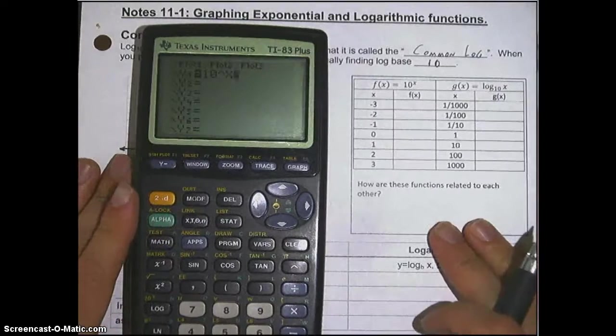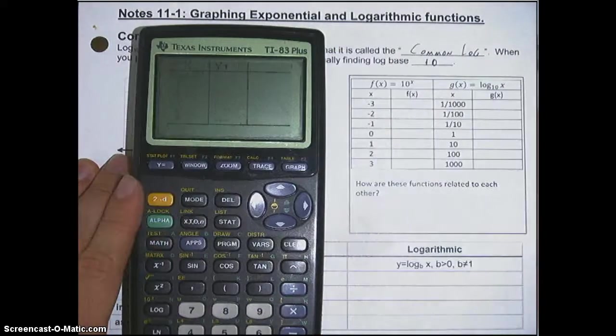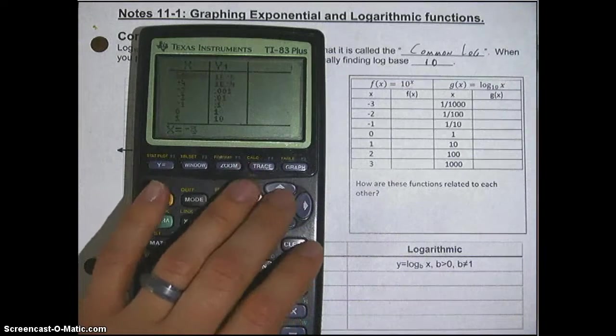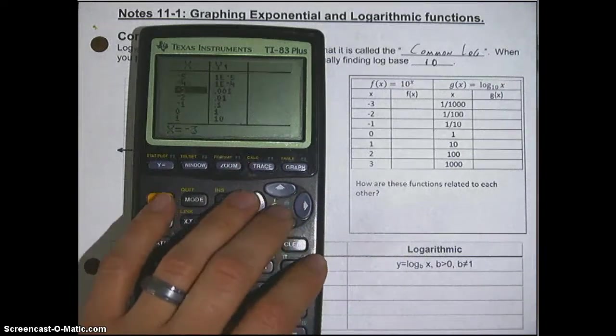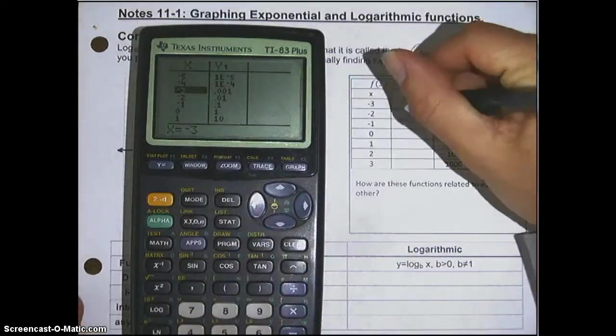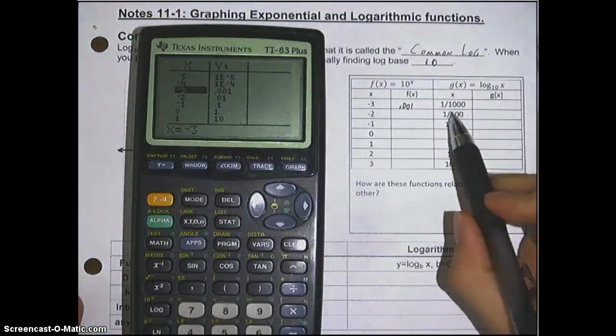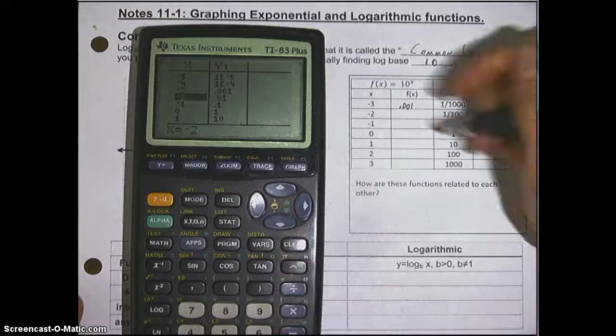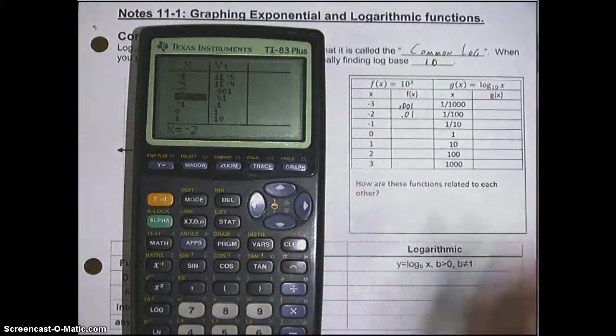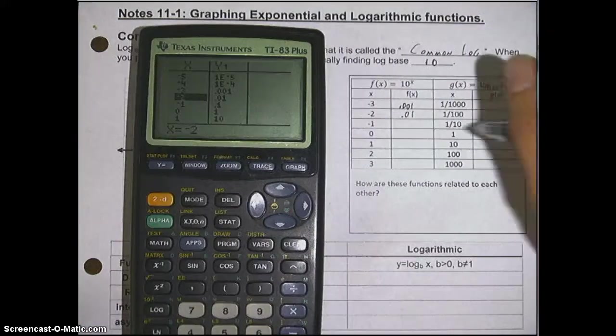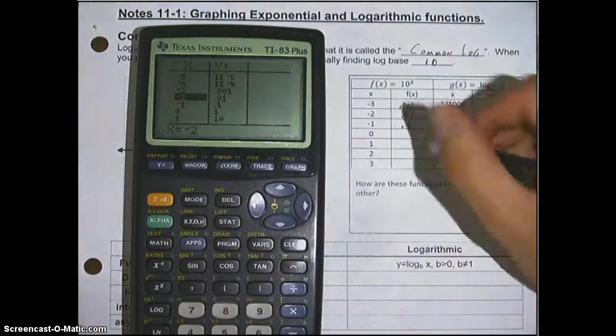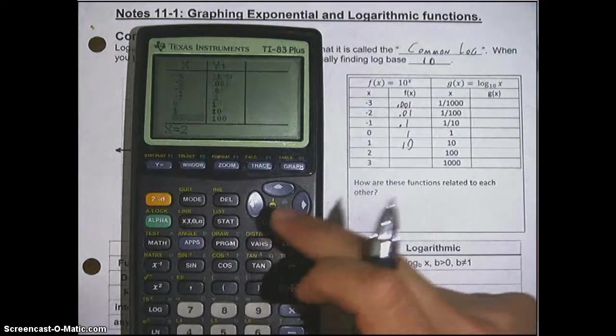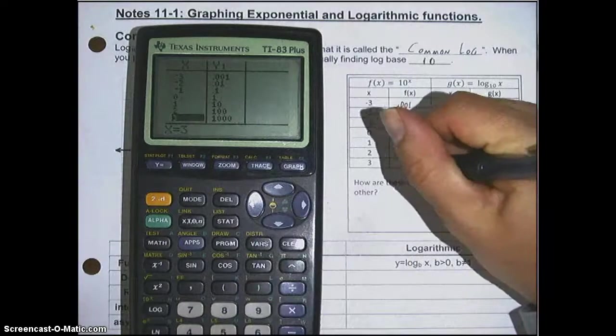Now to get a table of values, you type second graph here, and we want from negative 3 to positive 3. So negative 3 is 0.001, which is also known as 1 over 1,000. Negative 2 is 0.01, which is 1 over 100, and then negative 1 goes to 0.1. 0 is 1, 1 is 10, 2 is 100, 3 is 1,000.